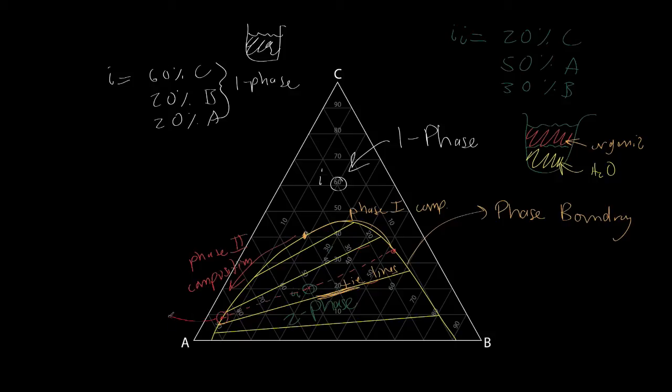Our phase II composition in this arbitrary configuration that I have drawn would be approximately, let's say, 94% A. And we would be about 8% C. And over here for B, we would be approximately 6 or so. Oh, sorry, this is 84% A and 8% B.